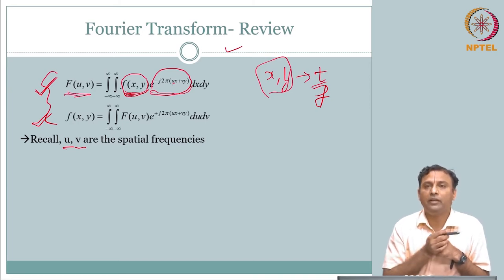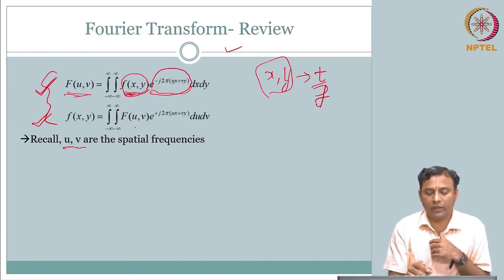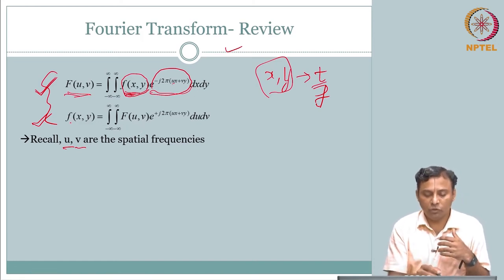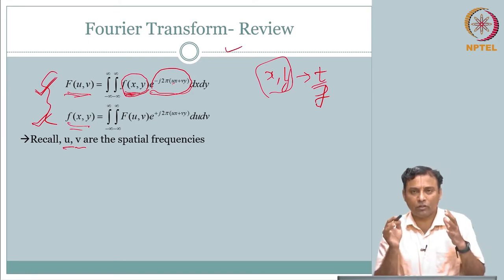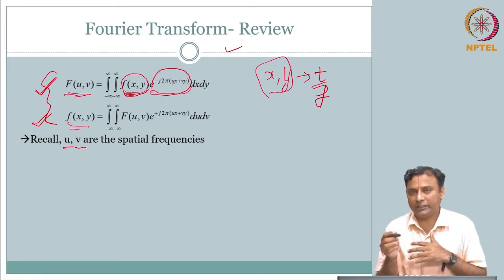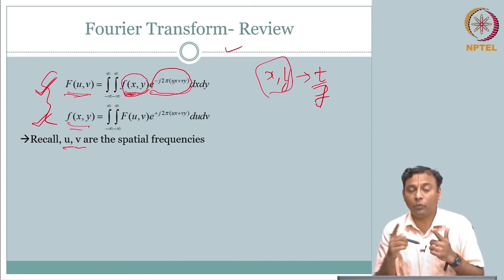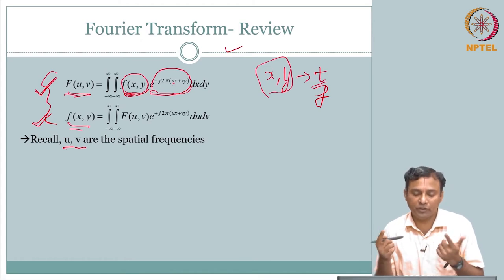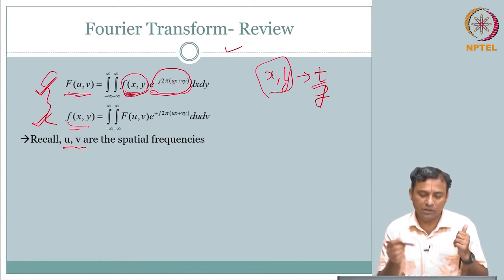F(u, v) tells you how much frequency content f(x, y) is composed of. Naturally, this is your forward transform, and similarly, if you are given all the frequency composition, you can get back to your spatial domain f(x, y). It is a very simple concept — a direct extension from time domain to frequency domain in one dimension: forward Fourier transform and inverse Fourier transform, same thing here in 2D.